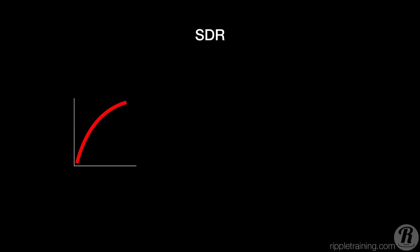Standard dynamic range refers to video encoded with a conventional gamma curve, as well as a bit depth of 8 bits per sample and a dynamic range of 6.8 stops, although with 10-bit encoding you can get up to 10 stops. So SDR is limited to 100 nits of brightness. This means that a piece of paper in the sun will look just as bright as the sun itself on any display, even if that display is capable of displaying much brighter brightness values.